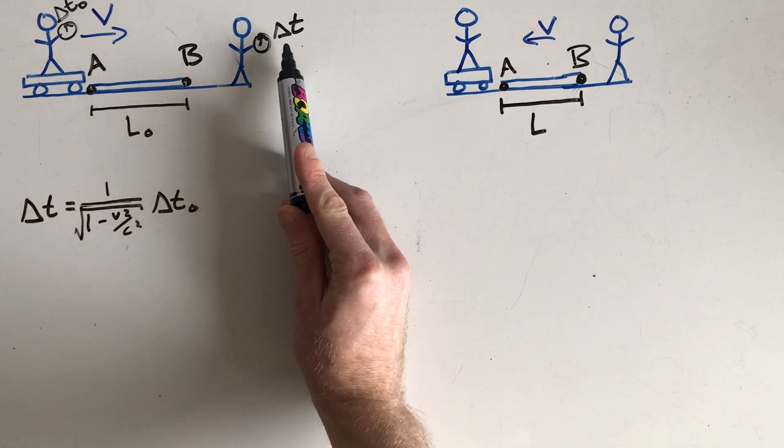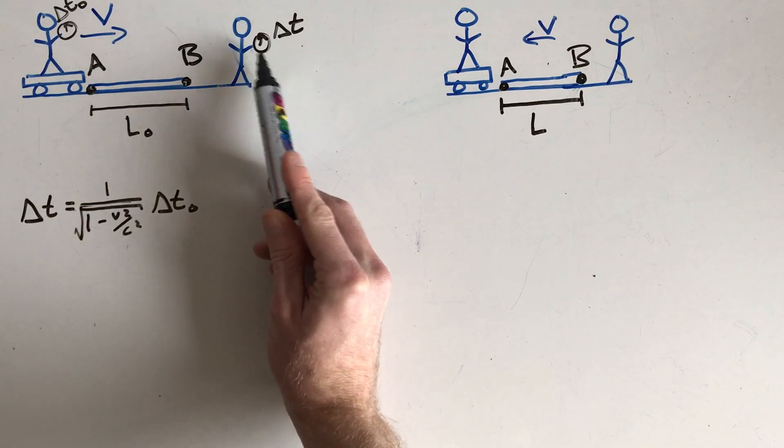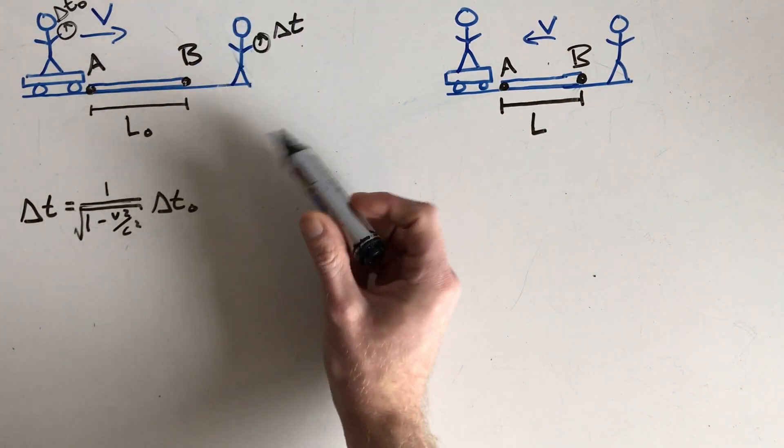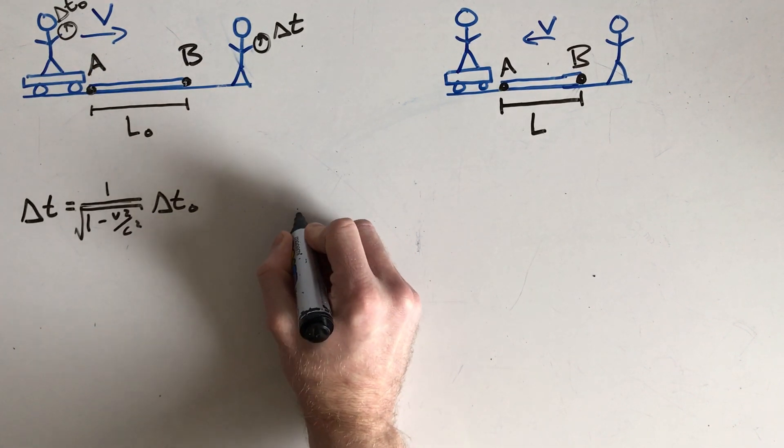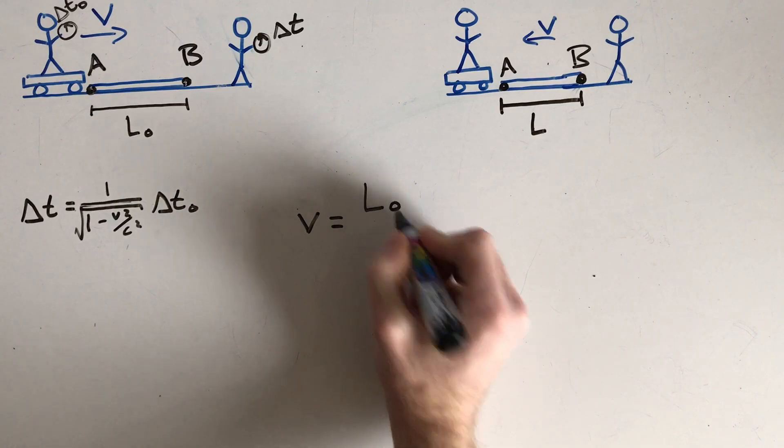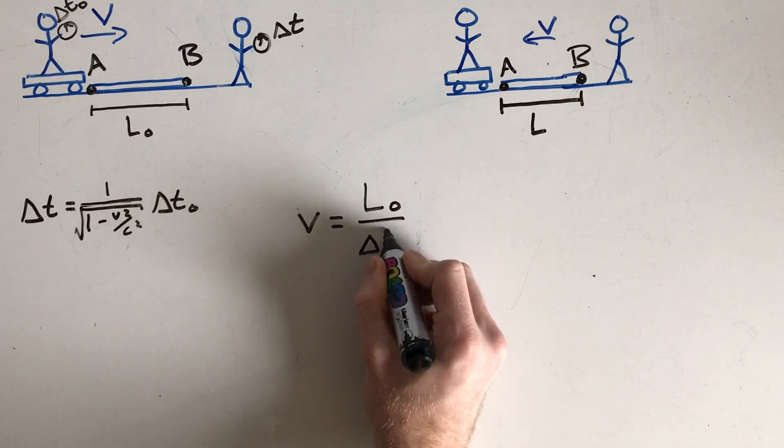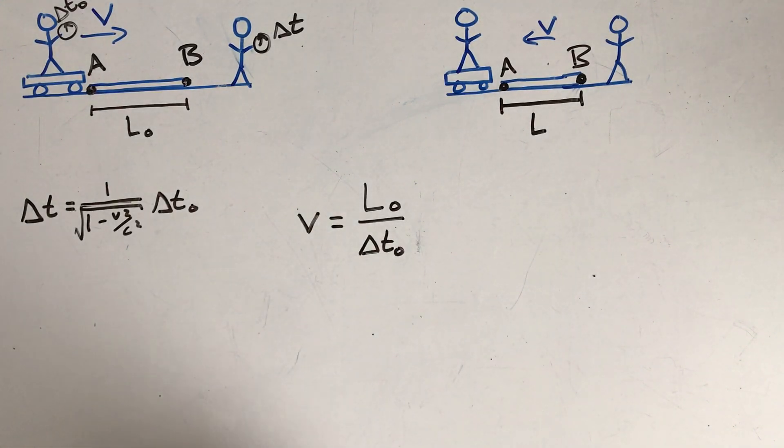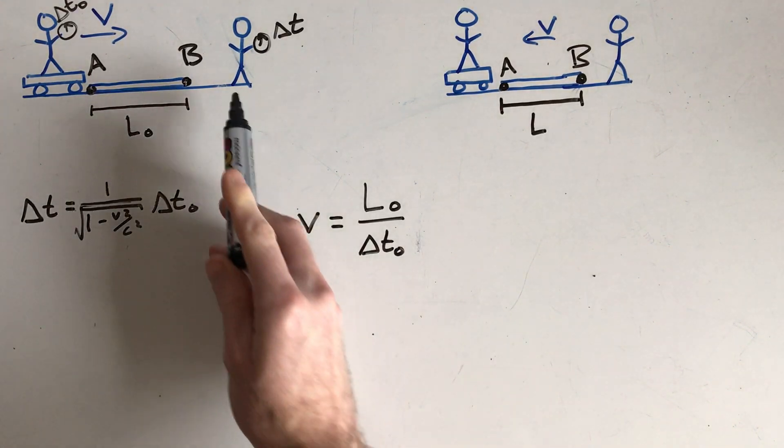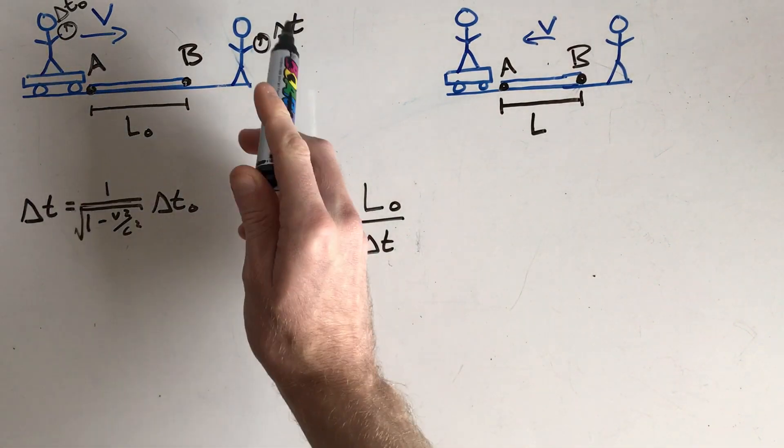So this person measures it takes time delta T to get from A to B. So this person would write an equation that looks like, okay, the skateboard is going at speed V. It covers a distance L naught in a time delta T naught. That's what this person will say. Oh no, not delta T naught, just delta T. That's the time they measure.